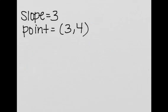Now we are given the slope of the line and the point on the line, and we are supposed to write the equation for this line in point-slope form.